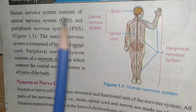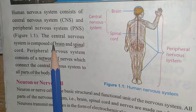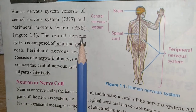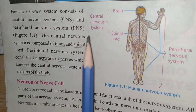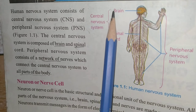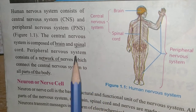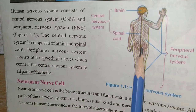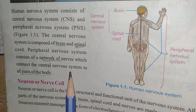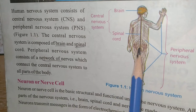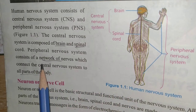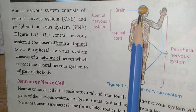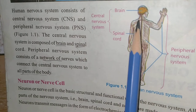The Human Nervous System consists of the Central Nervous System and the Peripheral Nervous System. There are two parts: the first is the Central Nervous System and the second is the Peripheral Nervous System. The Central Nervous System consists of two main parts: brain and spinal cord. The Peripheral Nervous System consists of a network of nerves which connect the central nervous system to all parts of the body.